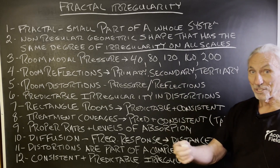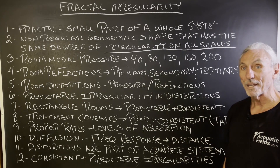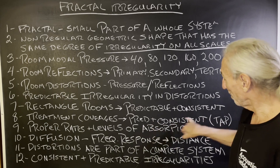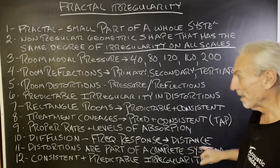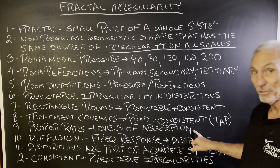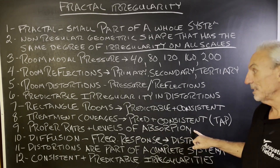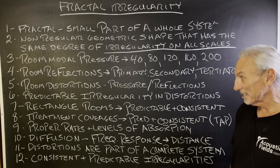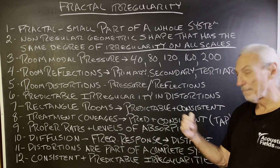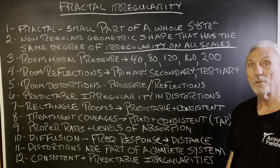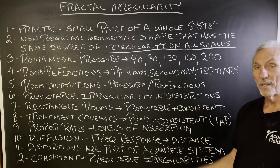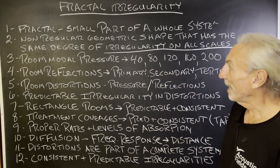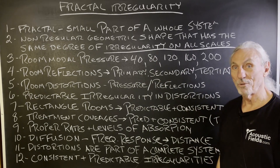If we know where the issues are and they're consistent throughout the room, we can apply the right treatment to each particular issue. Treatment coverage is predictable and consistent — type, amount, position. Proper rates and levels of absorption are predictable and consistent. Diffusion frequency response and distance are predictable and consistent. Distortions are part of a complete room acoustic system, and those irregularities are predictable and consistent at the same degree throughout the whole system.